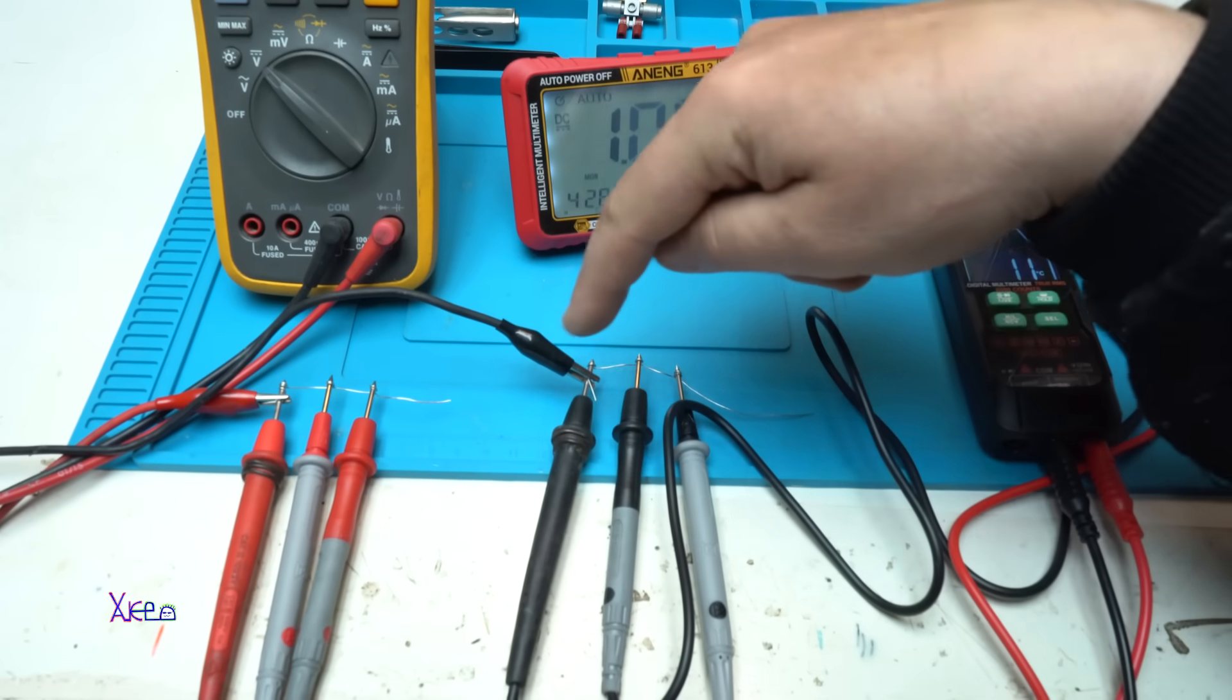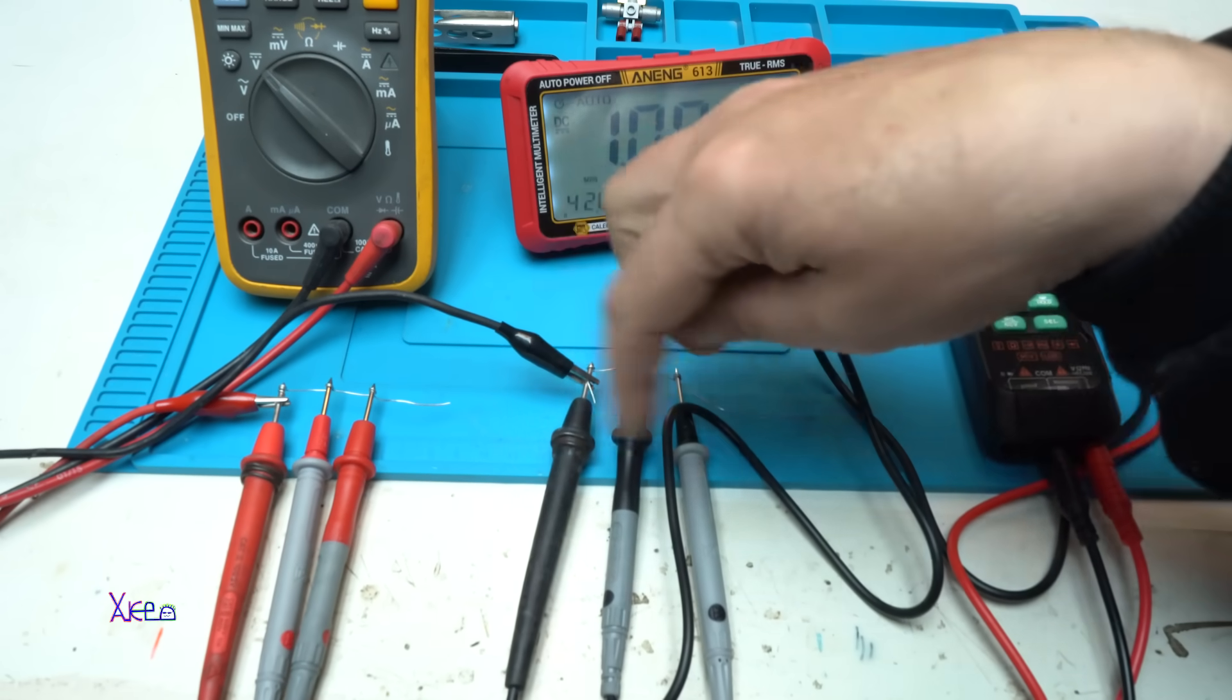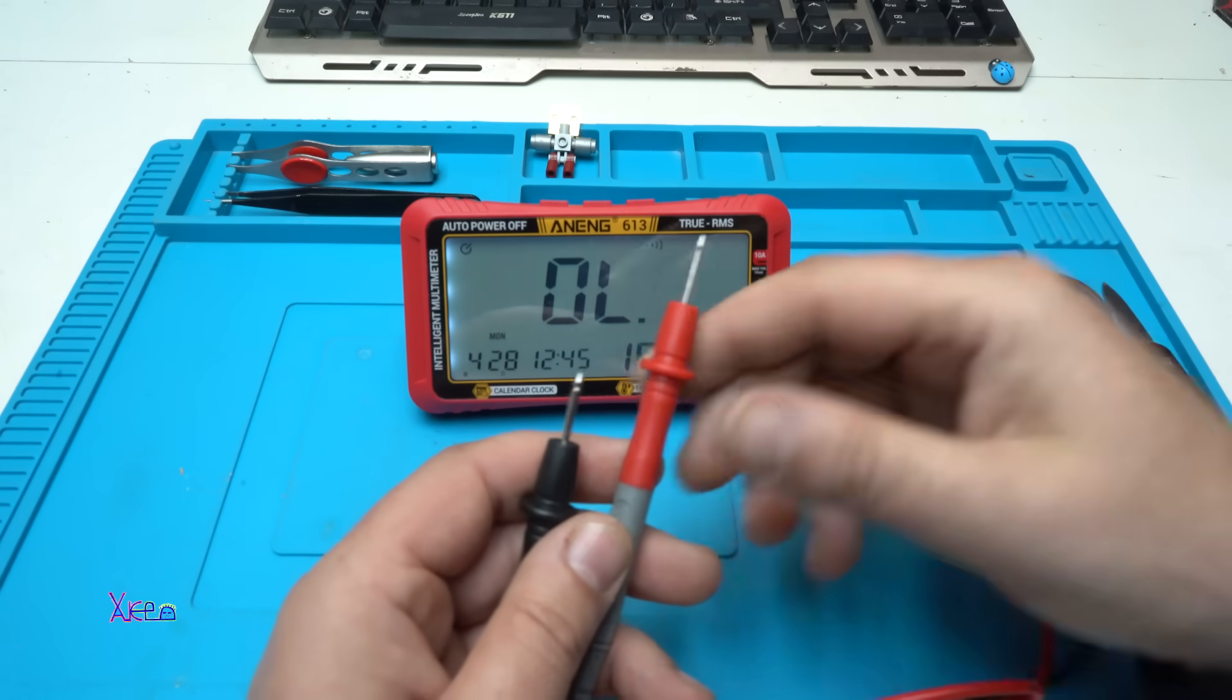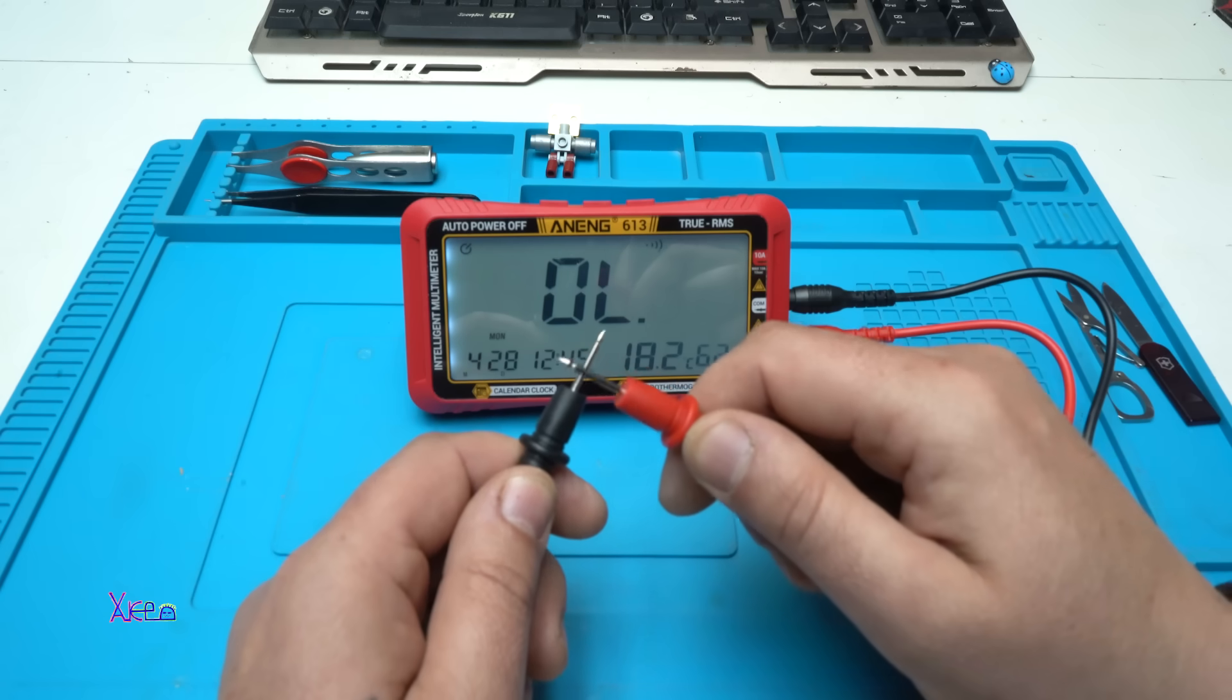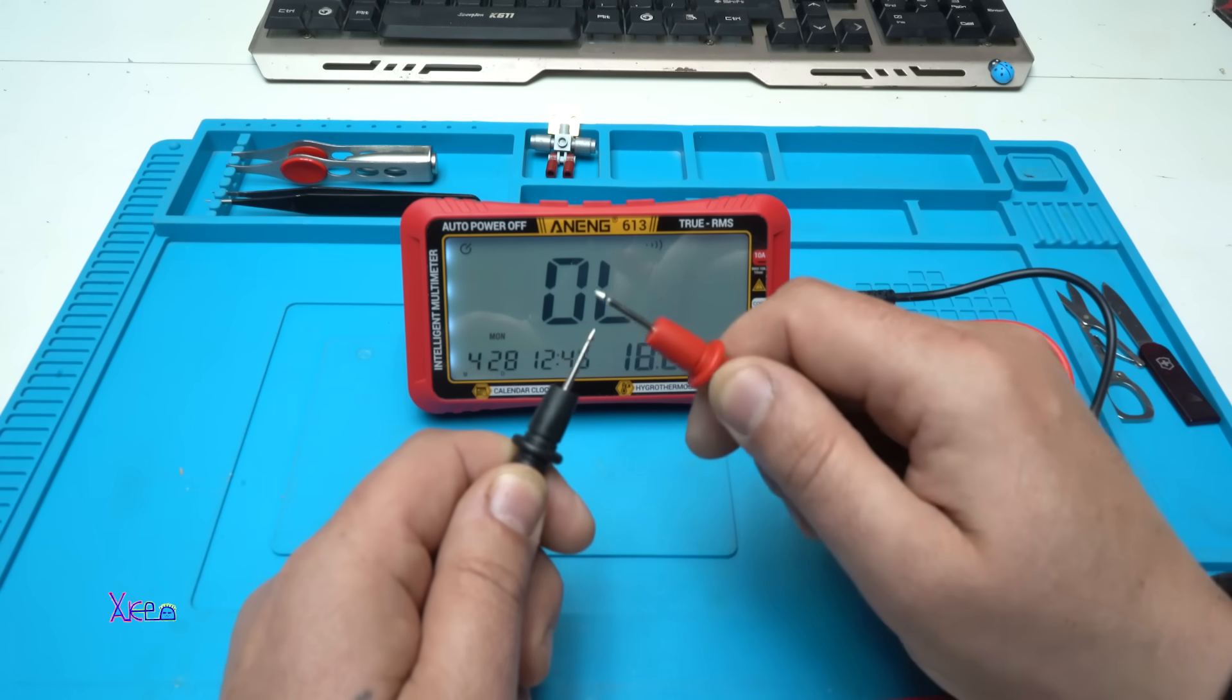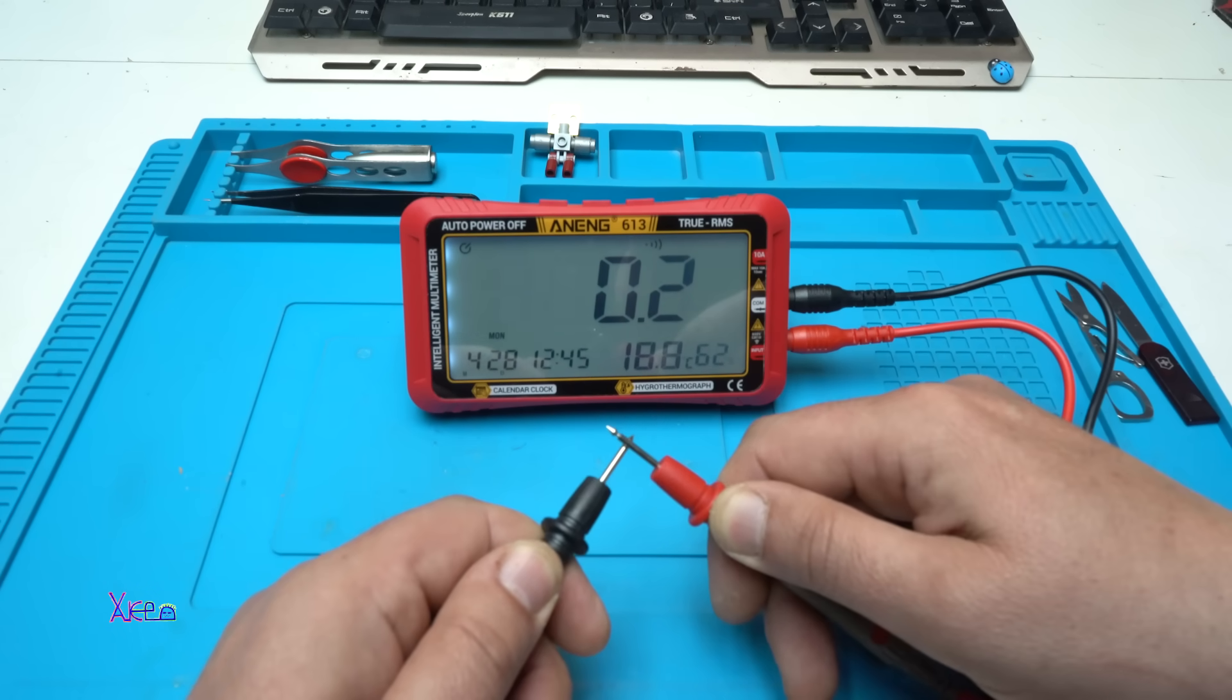And with simple wire I connect all the probes from the multimeters. Now it's set on continuity or beeping signal. Let's see how fast it is. It's fast, super fast. 0.2 ohms, 0.1. It's great.